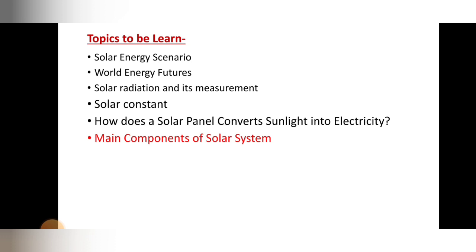The points covered previously include: solar energy scenario, world energy features, solar radiation and its measurement, solar constant, and how a solar panel converts sunlight into electricity. Now in today's lecture we are going to see the next topic — the main components of the solar system.